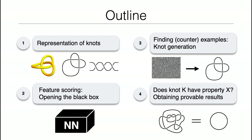The first part is about data representation. Sometimes your data is not just a number — it might be relations or a graph. In the Google example, they had a bunch of geometric and algebraic invariants, which were already numbers, and they were trying to find relations between them. However, you might want to feed the knot itself to the machine learning algorithm, and then you need to think about how you represent it. The second part will be about opening the black box — the white-boxing that Jim talked about.